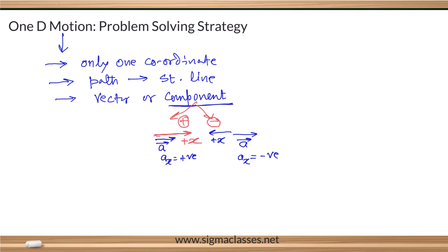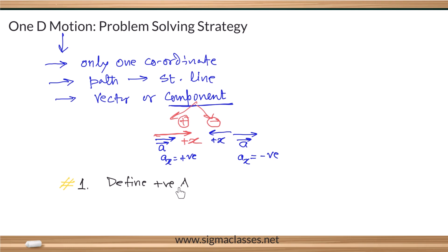So what should we do in the first step for one-dimensional motion? The first step is to define the positive x-axis. Why should we do this? Because you are dealing with components, and a component can be positive or negative — anything is possible.